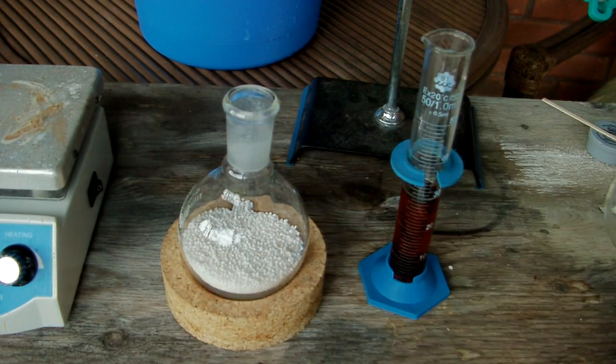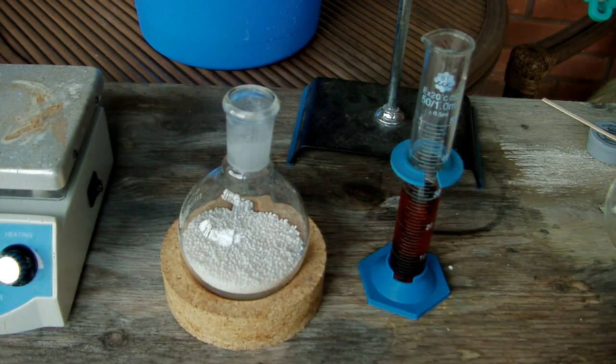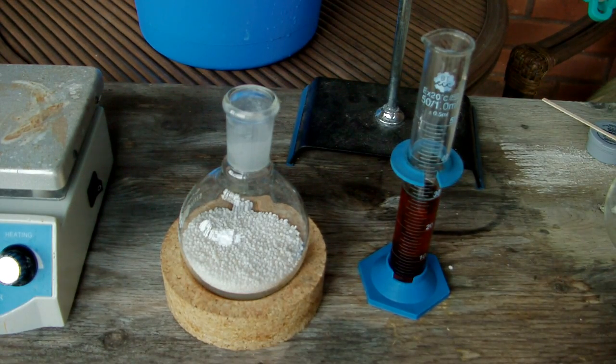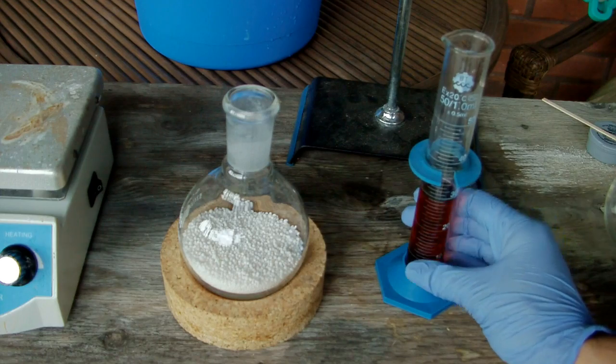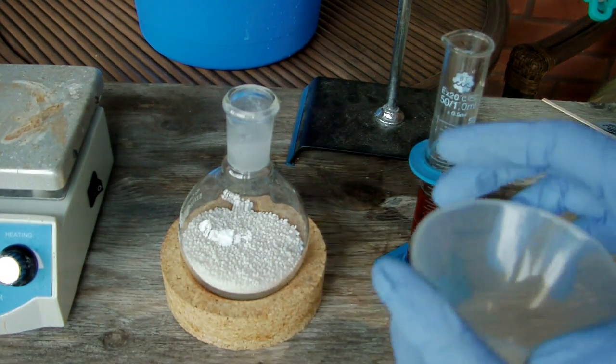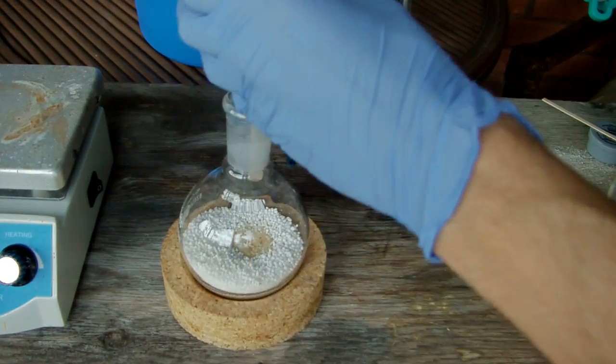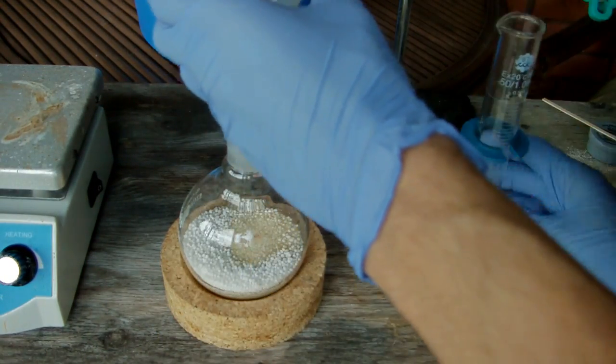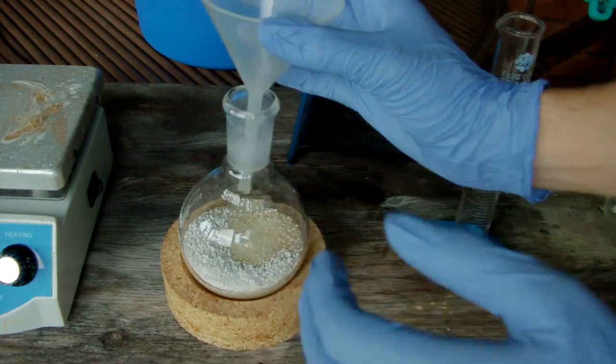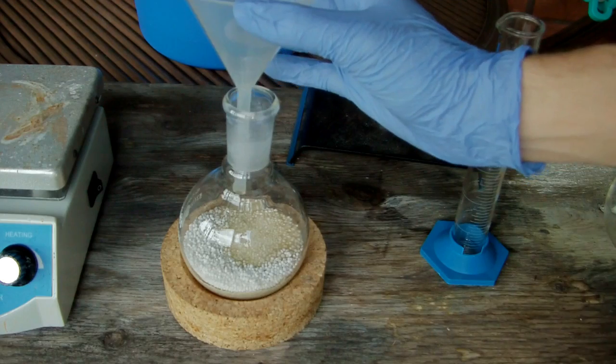So all I'm going to do is pour the one into the other, and it'll make the nitric acid in situ. And to separate it, we have to heat this thing up to the boiling point of nitric acid, which happens to be 83 degrees Celsius. Okay, so now that those are reacting, I'm going to assemble my distillation setup.